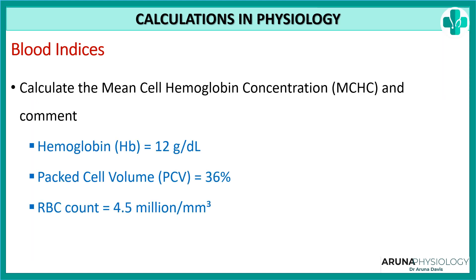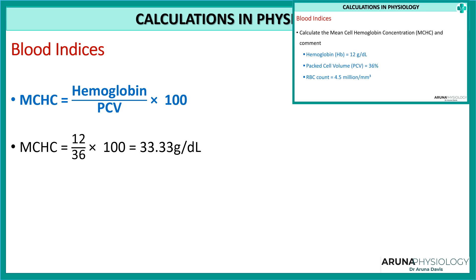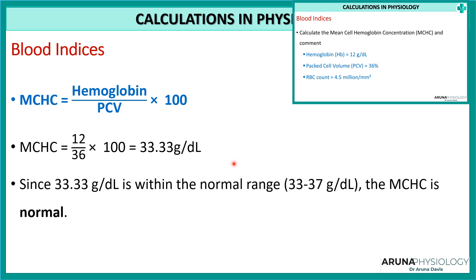Finally, calculate the MCHC. All three values are given. The formula for MCHC is hemoglobin divided by PCV, multiplied by 100. Substituting the values gives 33.33. Since the normal range is 33 to 37, the MCHC here is normal.